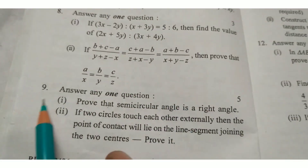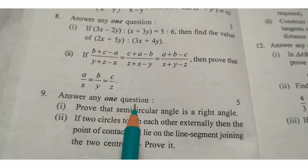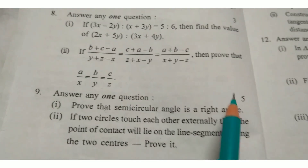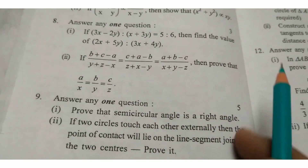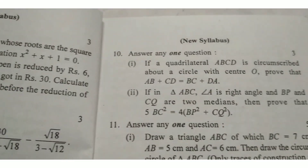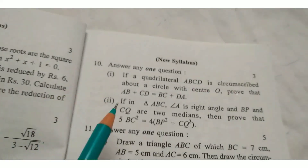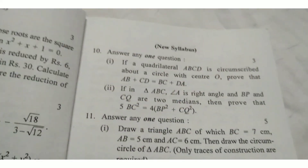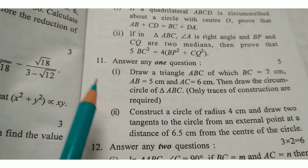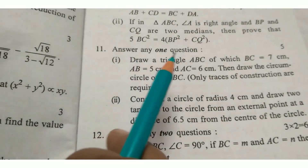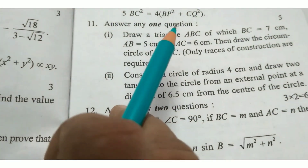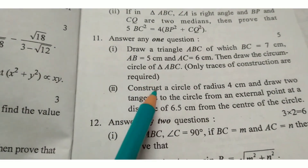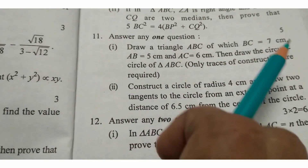Question number 9: Answer any 1 — two questions from Theorems, answer any 1, for 5 marks. Question number 10: Answer any 1 question from Geometry, 3 marks. Question number 11: Answer any 1 question from Construction — two questions from construction, answer any 1, for 5 marks.